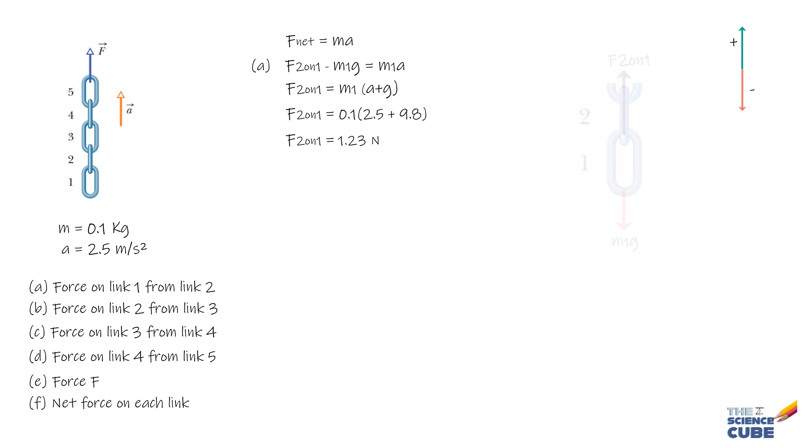The next question is: what is the force on link 2 from link 3, or F3 on 2? Once again, we draw a free body diagram for link 2 and find the forces acting on link 2. We have F3 on 2, that is link 3 pulling link 2 up, minus F1 on 2, that is link 1 pulling link 2 down.